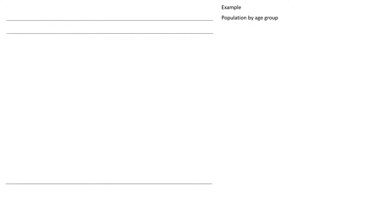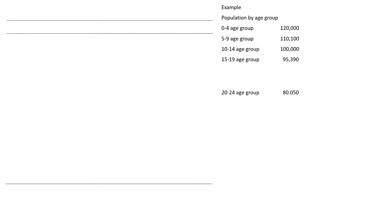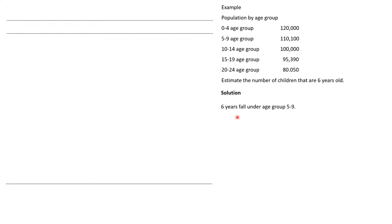Now let's look at a worked example. We have a population by age group: 0 to 4 is 120,000; 5 to 9 is 110,100; 10 to 14 is 100,000; 15 to 19 is 195,390; and 20 to 24 is 80,050. We are expected to estimate the number of children within the six-year age group. First, we determine which five-year age group six years falls under.